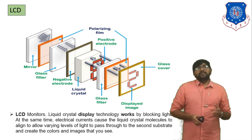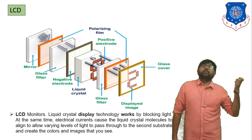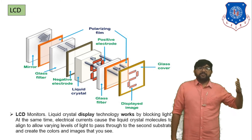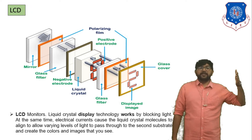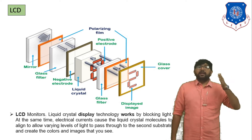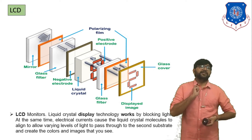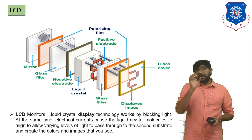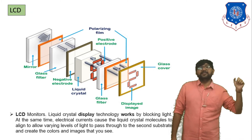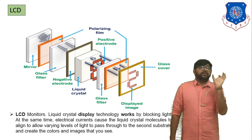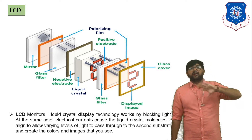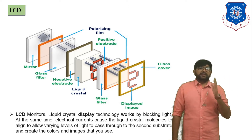In LCD we use white light — an electromagnetic light source. First that light passes through a mirror, then through a glass filter, then through the negative electrode, then through the liquid crystal. Liquid crystal is not 100% in liquid form nor 100% in solid form; it is a combination of liquid and solid form. It is not considered purely liquid crystal or purely solid crystal. This is the property of liquid crystal.